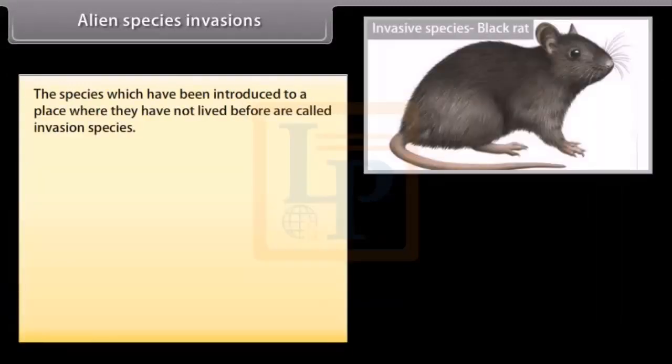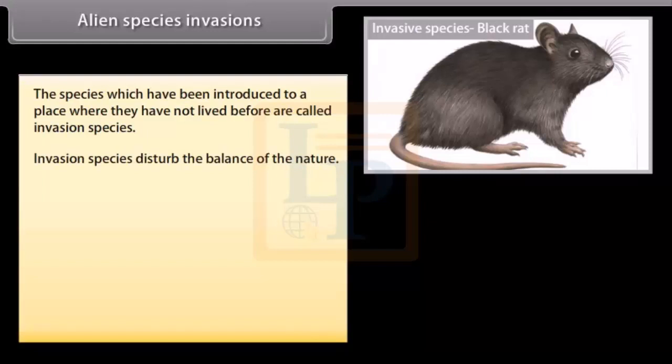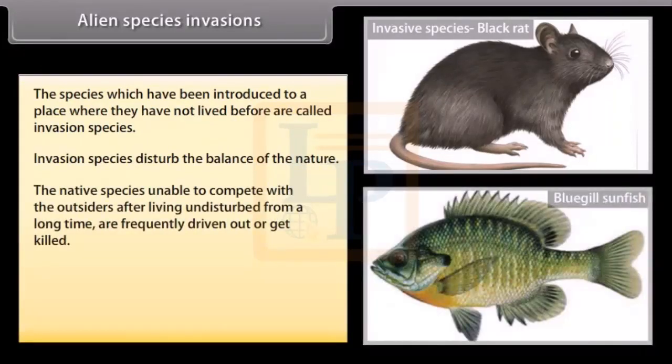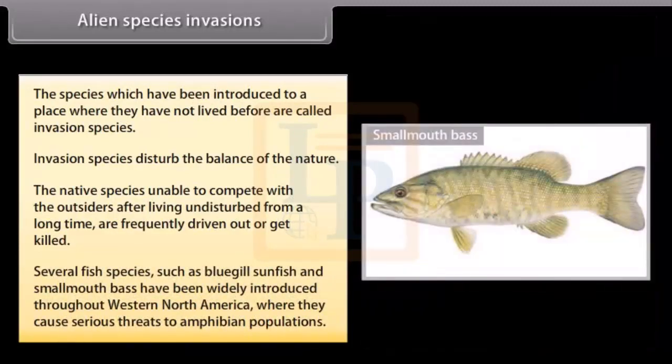Alien Species Invasions. The species which have been introduced to a place where they have not lived before are called invasion species. Invasion species disturb the balance of the nature. The native species, unable to compete with the outsiders after living undisturbed for a long time, are frequently driven out or get killed. Several fish species, such as bluegill sunfish and smallmouth bass, have been widely introduced throughout western northern America, where they cause serious threats to amphibian populations.